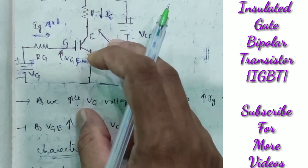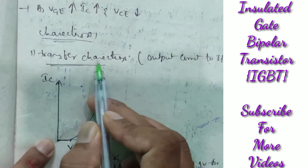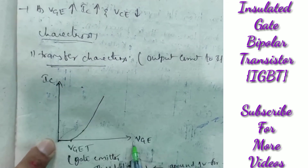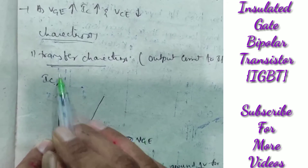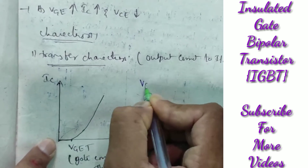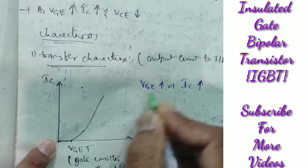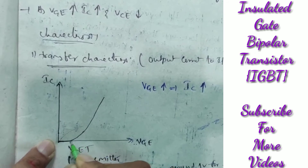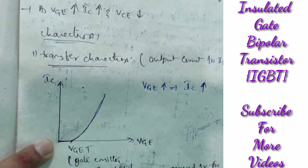Let's discuss the transfer characteristics. The transfer characteristics are drawn between output current IC and input voltage VGE. As we increase VGE, the collector current IC is increased. At first the current is zero, and as we increase VGE, the IC is gradually increased. This is about the transfer characteristics.